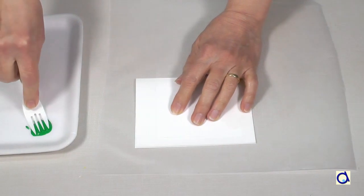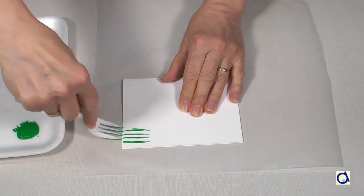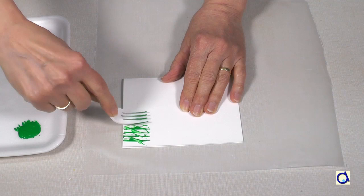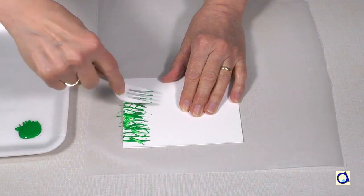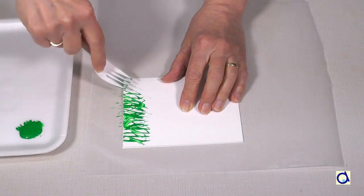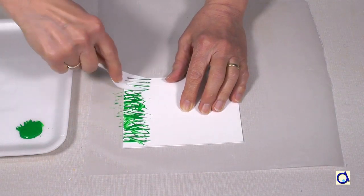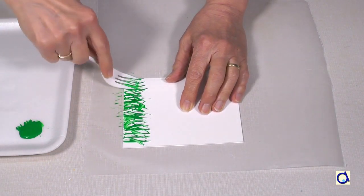Place the folded sheet on waxed paper or newspaper to protect the table. Paint the bottom of the front of your card using a plastic fork. Dip the tines of the fork in green paint to create the blades of grass.